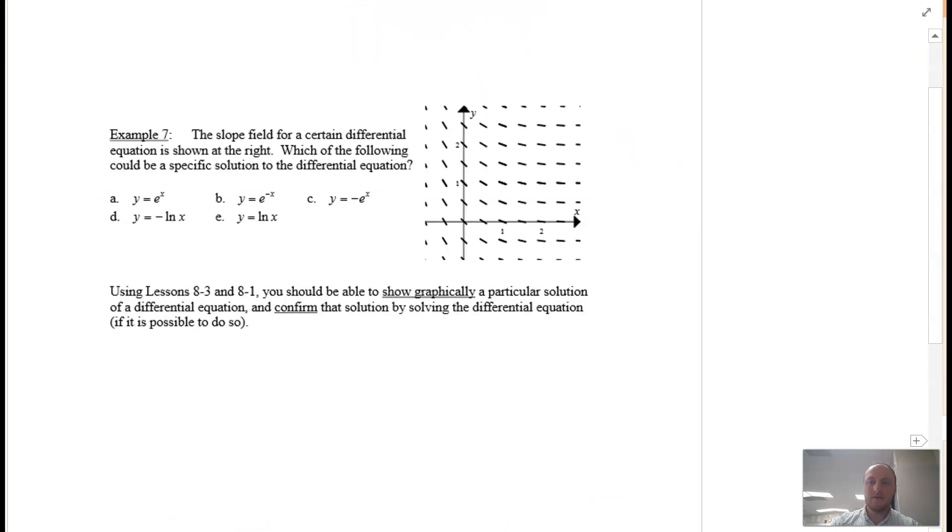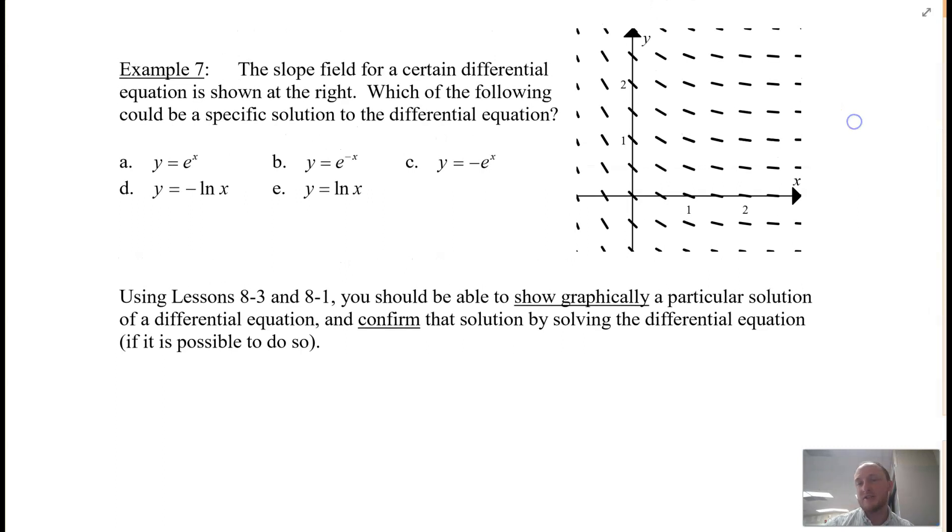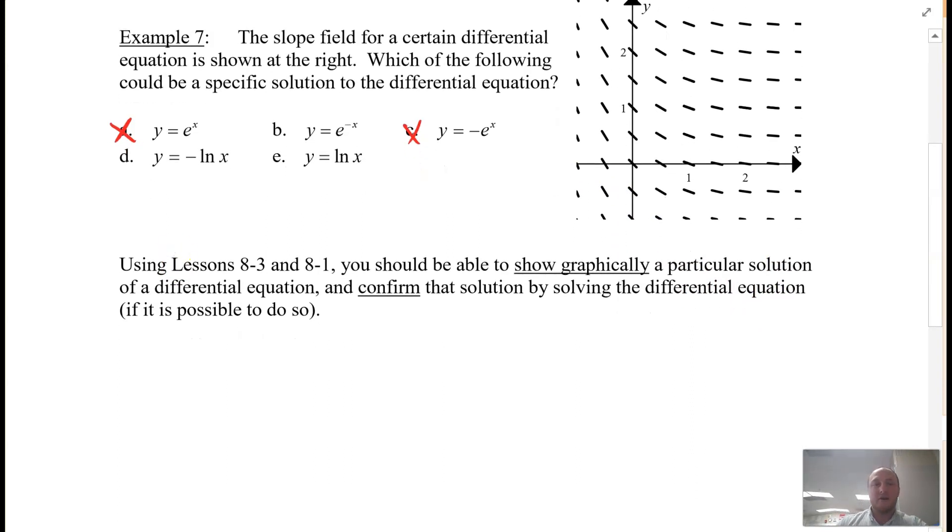And then example 7, same kind of game. Here they want to know the slope field for a certain differential equation shown at the right, which of the following could be a specific solution to the differential equation. And kind of here, just your knowledge of the functions comes into play. So we'll look at a, y = e^x. Well, that is an exponential function that looks something like this. Does that match that slope field? No, it does not. So I can throw that one out. We'll go ahead and look at c, y = -e^x. Well, that's just a reflection. It looks something like this. I did totally miss my y-intercept there, which doesn't match. No, it doesn't. So we throw that one out.